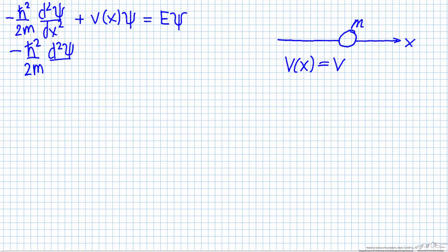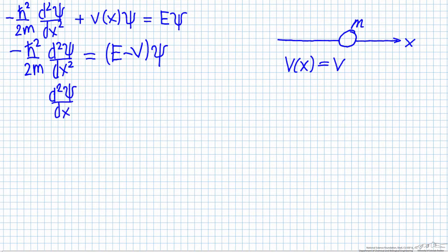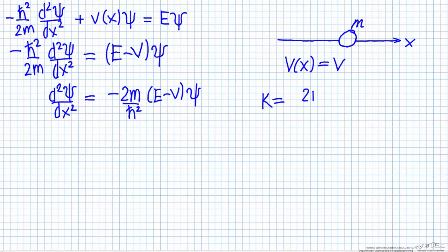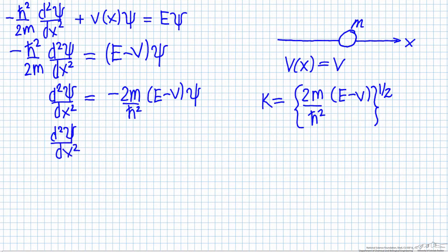The first term stays the same; this equals the total energy minus the potential energy, times the wave function. Multiplying both sides by negative 2 times the mass divided by h-bar squared leaves the second derivative alone on the left side. It's convenient to define a constant k, where k equals the square root of 2 times the mass divided by h-bar squared, times the quantity total energy minus the potential. This lets us rewrite the Schrödinger equation as: the second derivative of the wave function equals negative k squared times the wave function.